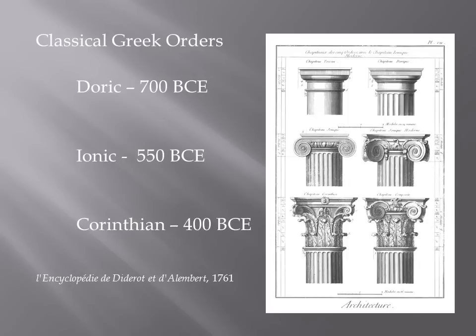When we get to the Ionic order, we have those scrolls — those volute scrolls — something we see today on buildings. But we also see them on the peg boxes of string instruments. It was a way that early string makers in the Renaissance period were able to incorporate something very beautiful in their creation of musical instruments. Today you will see those volute scrolls on musical instruments such as violins, cellos, and violas, on the peg box at the top of the neck.